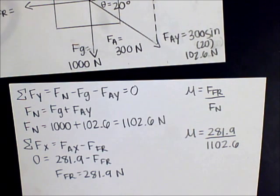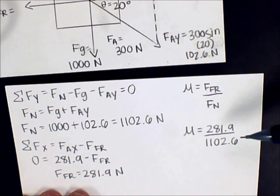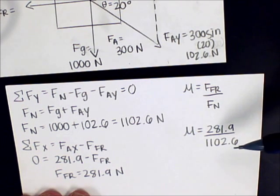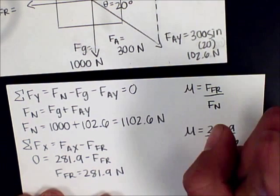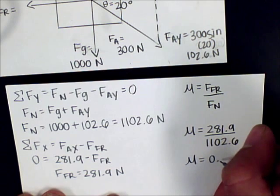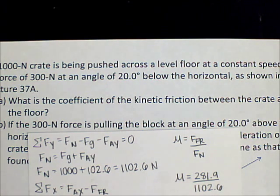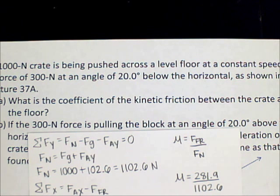Now that we know the force of friction and the normal force, we can easily find mu kinetic. Our force of friction is 281.9 newtons over the normal force of 1,102.6 newtons. Dividing through, our mu is equal to 0.256. Going back to our question — what is the coefficient of kinetic friction between the crate and the floor? — our mu is 0.256.